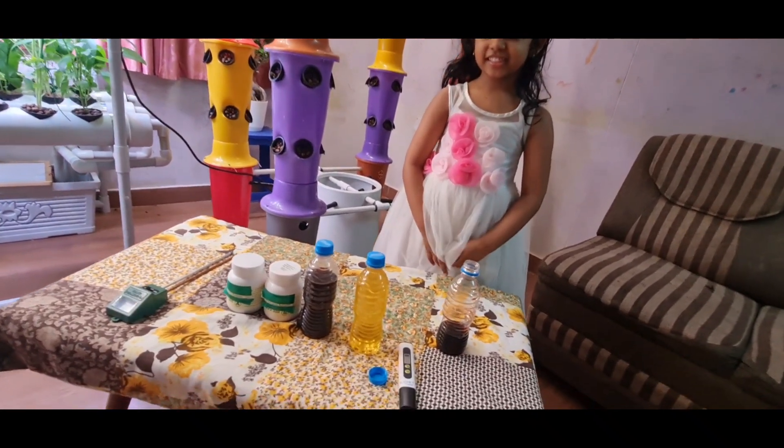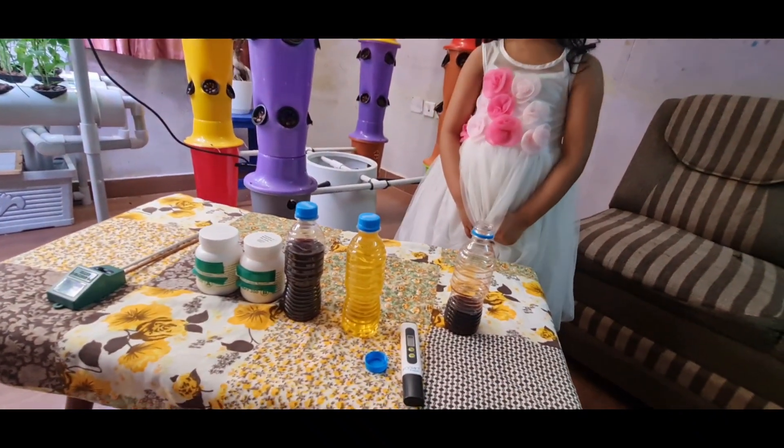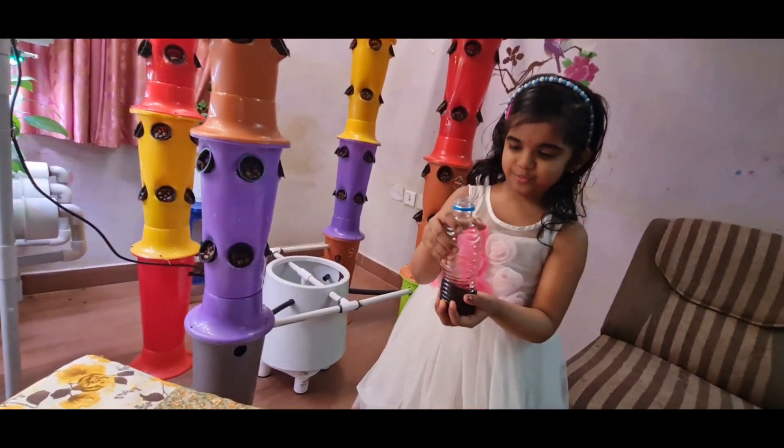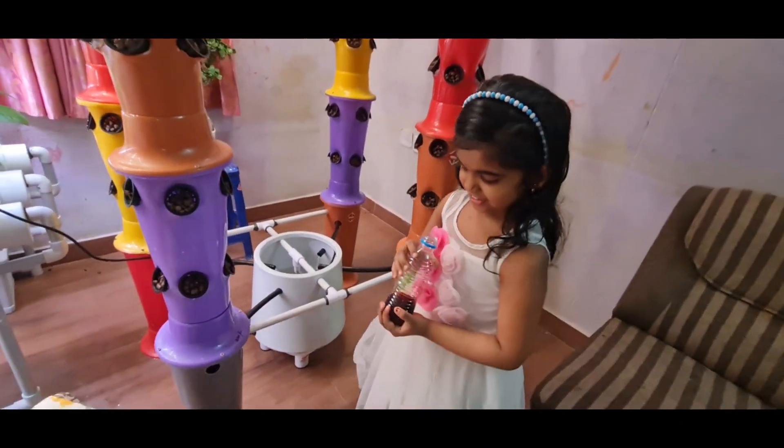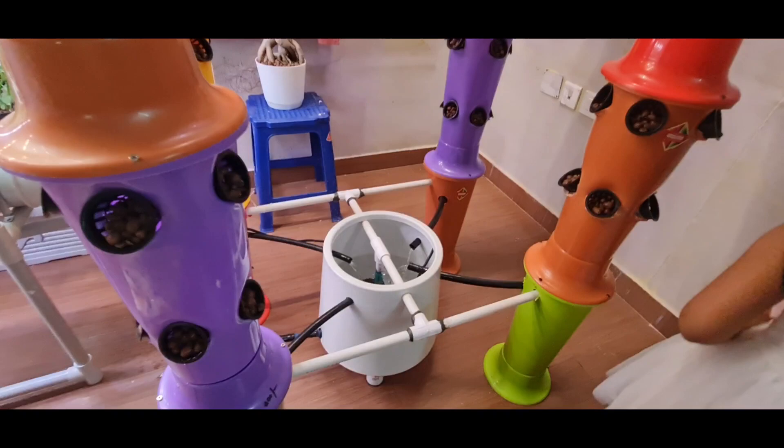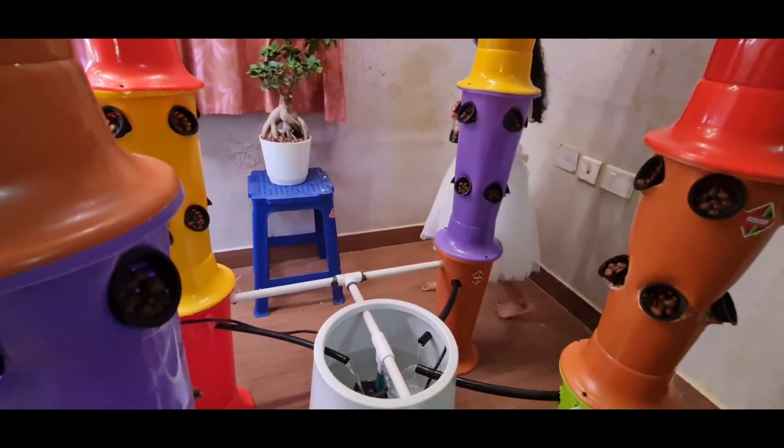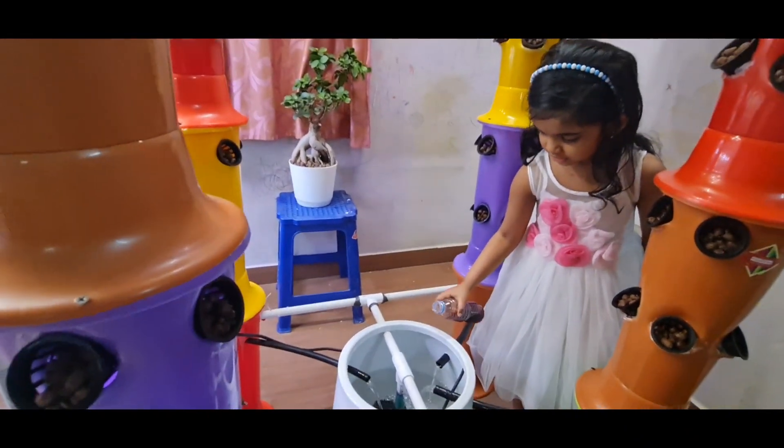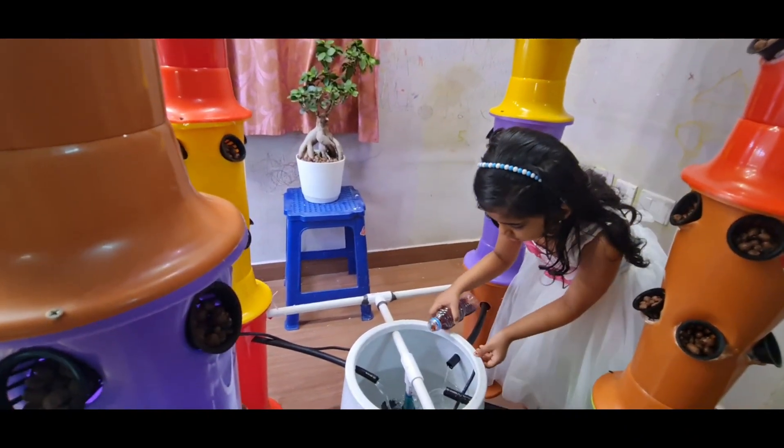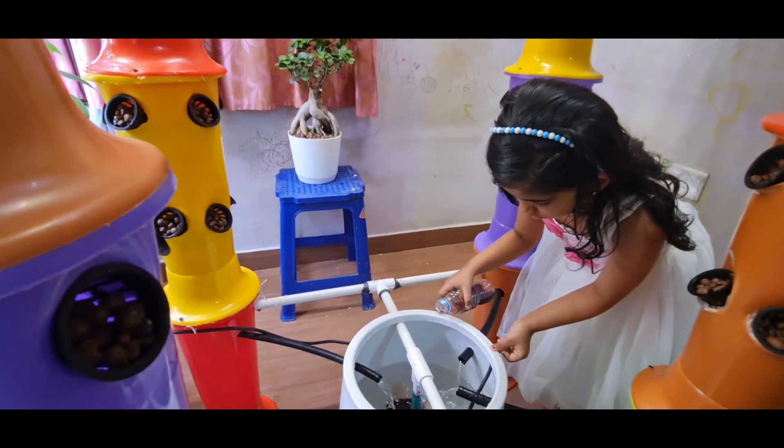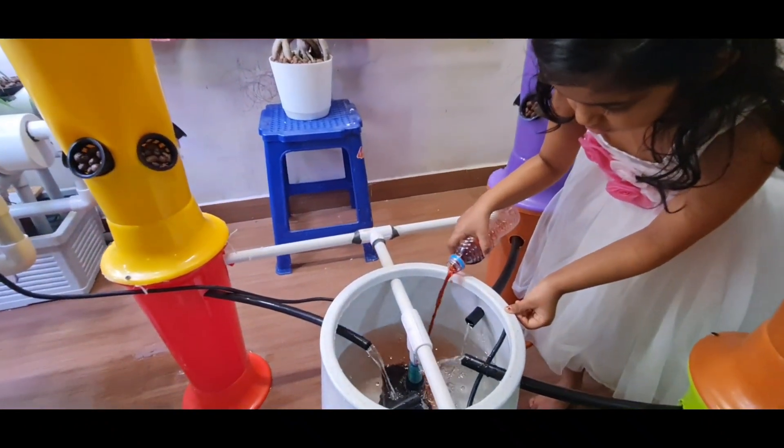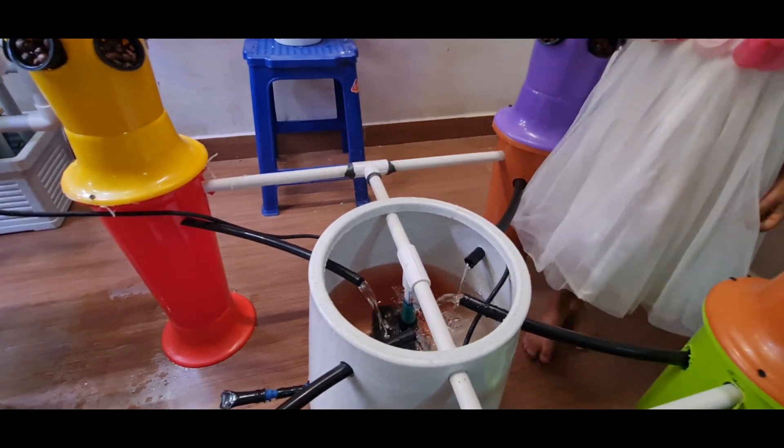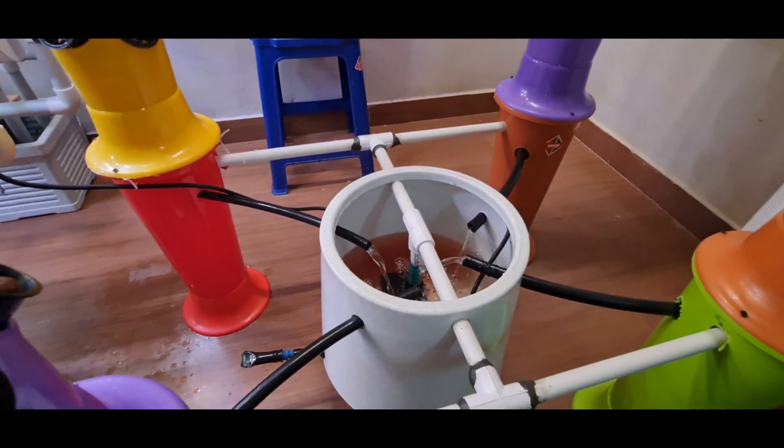Carry on. Take the nutrient solution A slowly. Here we go. We are adding our nutrient solution A. Slowly, slowly. Don't touch the pipe. As you can see, the color of our water is changing. We have added 75 ml of nutrient solution A.